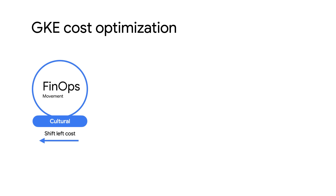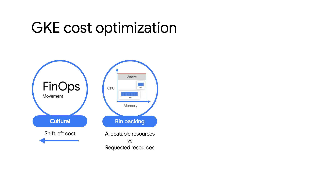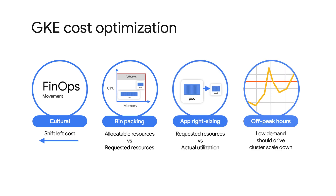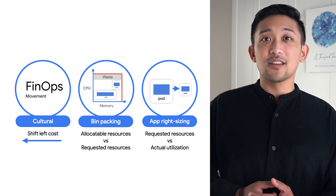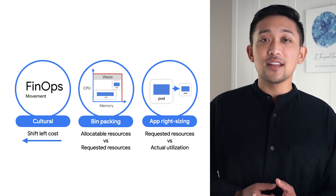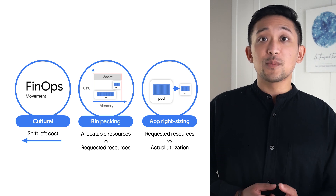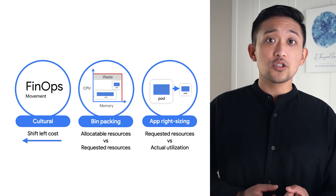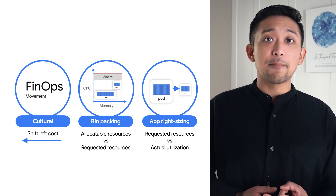As you may have seen in previous videos from this series, there are a handful of critical areas to practice cost optimization in a GKE environment. We'll focus on three of these areas and how they fit into a monitoring system for cost optimization: culture, bin packing, and app rightsizing.